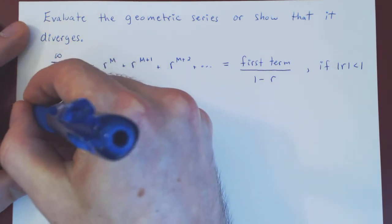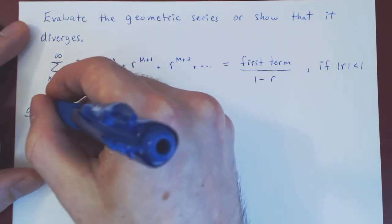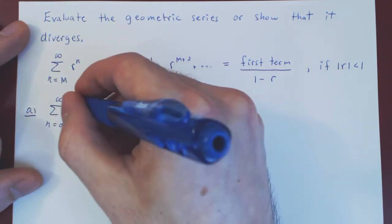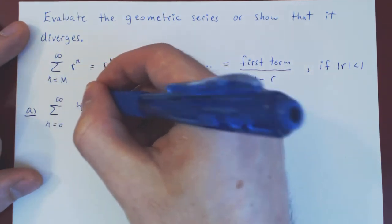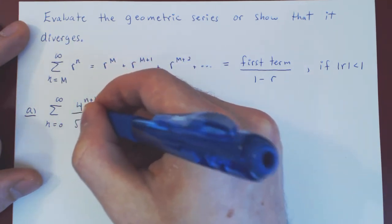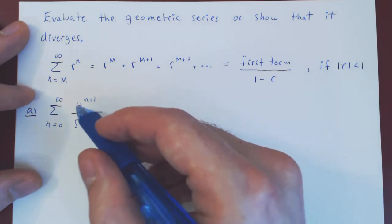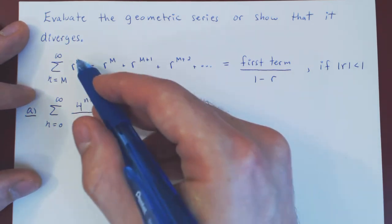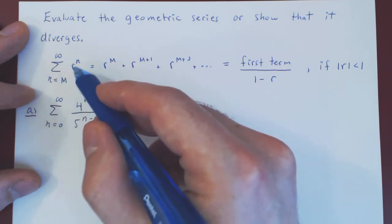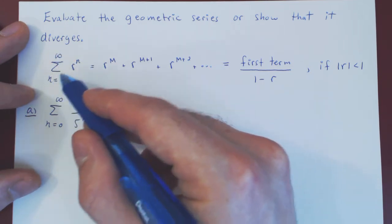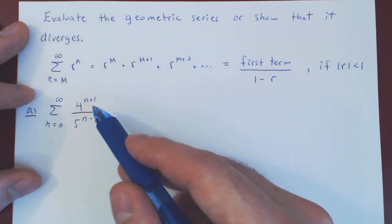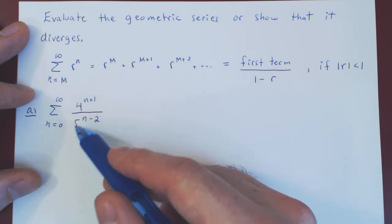Here's the first example. What if we are summing from 0 to infinity, 4 to the n+1, over 5 to the n−2? This is not exactly in the right form — we're supposed to sum the nth power of a fixed number. Here we have the (n+1)th power of 4, and the (n−2)th power of 5.